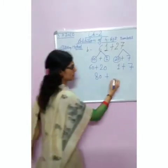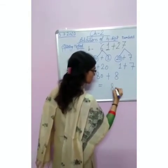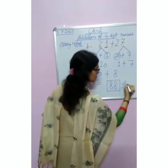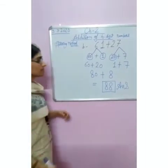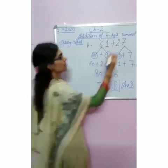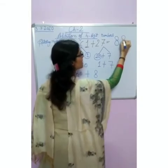So our answer is 88. If we add 61 plus 27 directly, then also our answer is 88. I hope the concept of the splitting method is clear to you. Now you will solve the book exercise. We will meet in our next class of maths. Thank you.